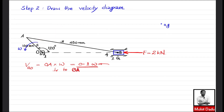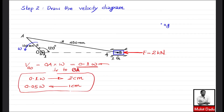For the velocity diagram scale, 0.1ω is represented by 2 cm, so 1 cm represents 0.05ω. We draw a 2 cm vector perpendicular to link OA from the zero-velocity point to represent V_AO, marking the tip as point 'a'.